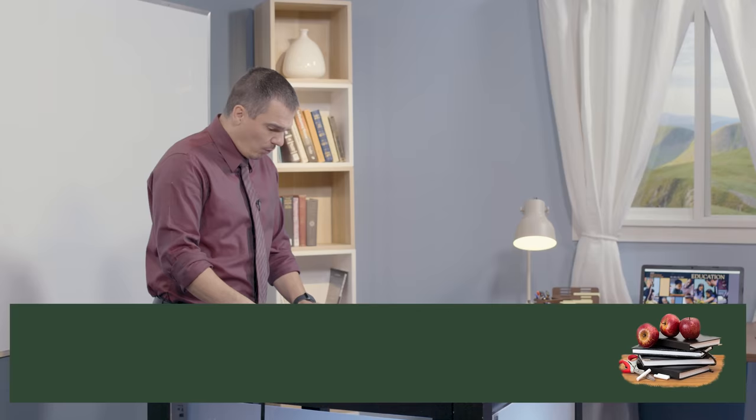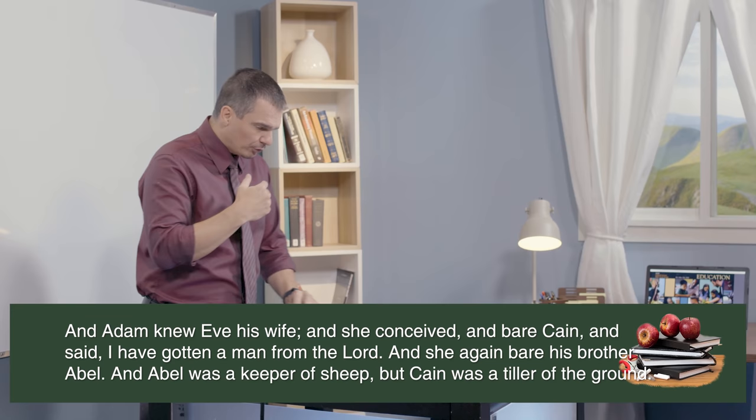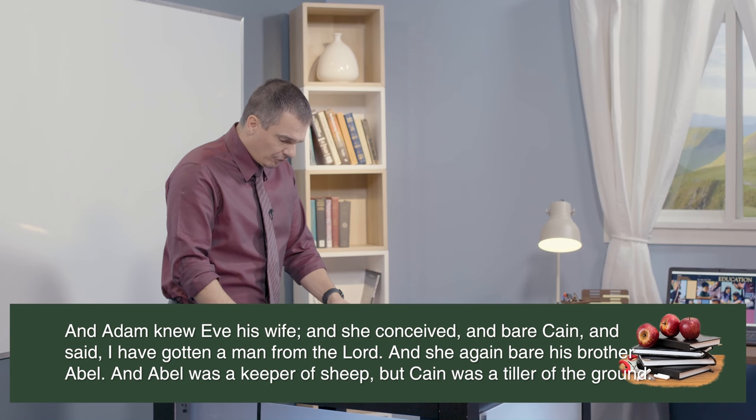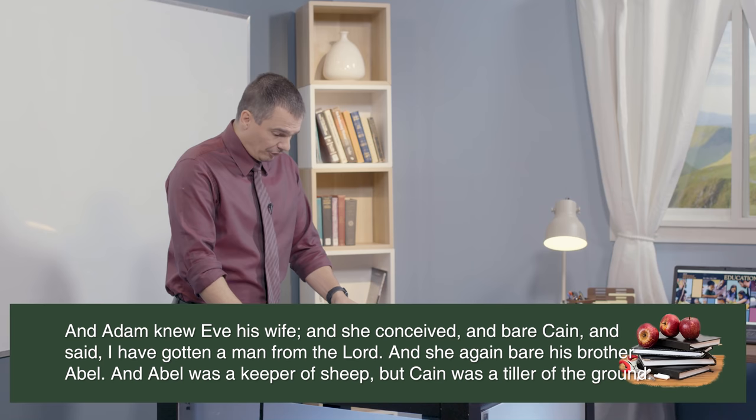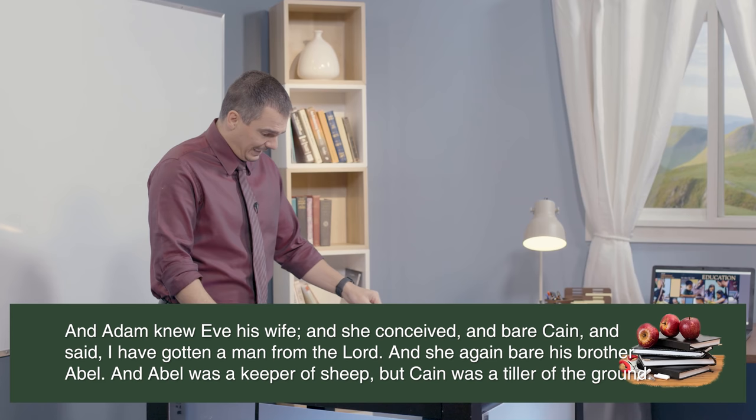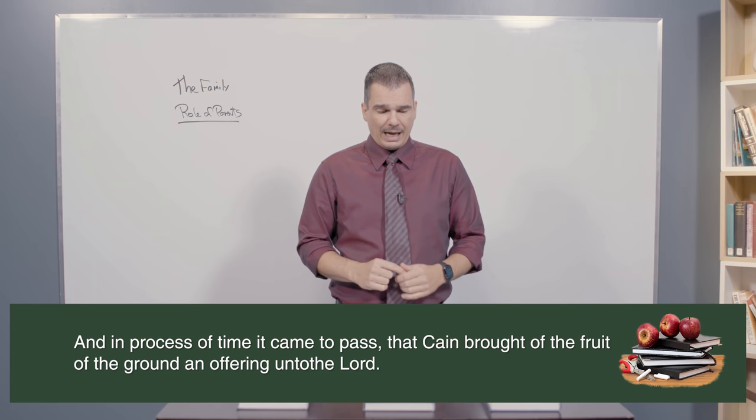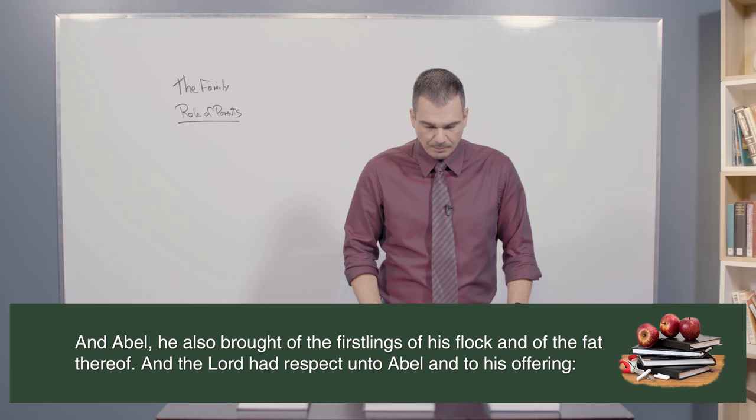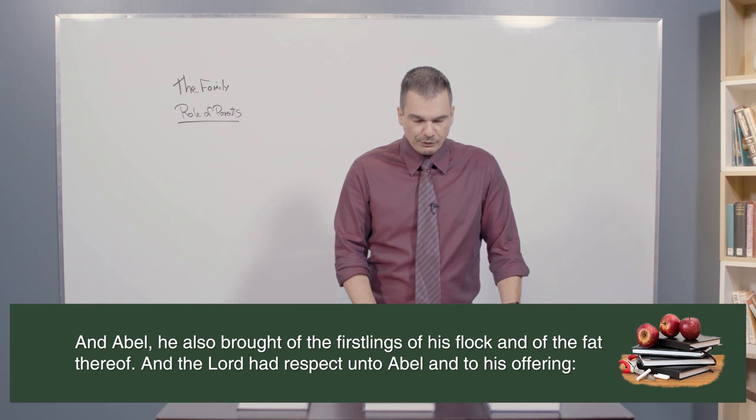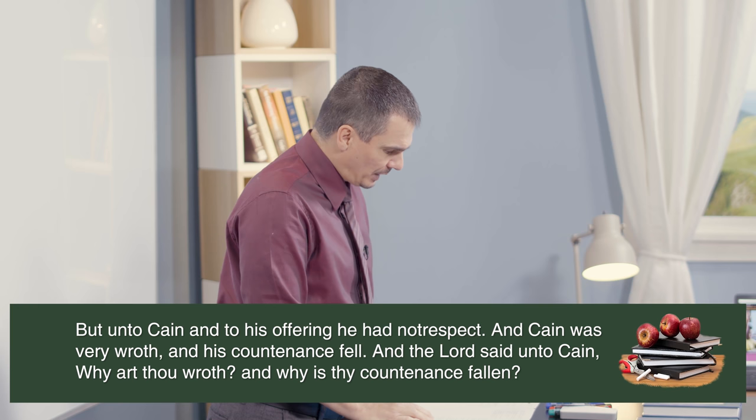In Genesis 4, we'll read verses 1 through 7. It says, And Adam knew his wife, and she conceived, and bare Cain, and said, I have gotten a man from the Lord. And she again bare his brother Abel. And Abel was a keeper of sheep, but Cain was a tiller of the ground. And in the process of time, it came to pass that Cain brought of the fruit of the ground and an offering unto the Lord. And Abel, he also brought of the firstlings of his flock and of the fat thereof, and the Lord had respect unto Abel and to his offering. But unto Cain and to his offering, he had not respect. And Cain was very wroth, and his countenance fell.